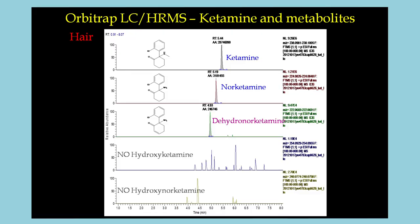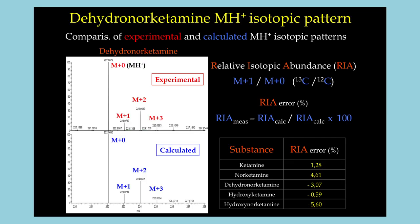Likewise, dehydronorketamine, a minor metabolite of ketamine, has for the first time been detected using Orbitrap HR-MS in the head hair of a driver applying for driving license re-granting after criminal infraction.